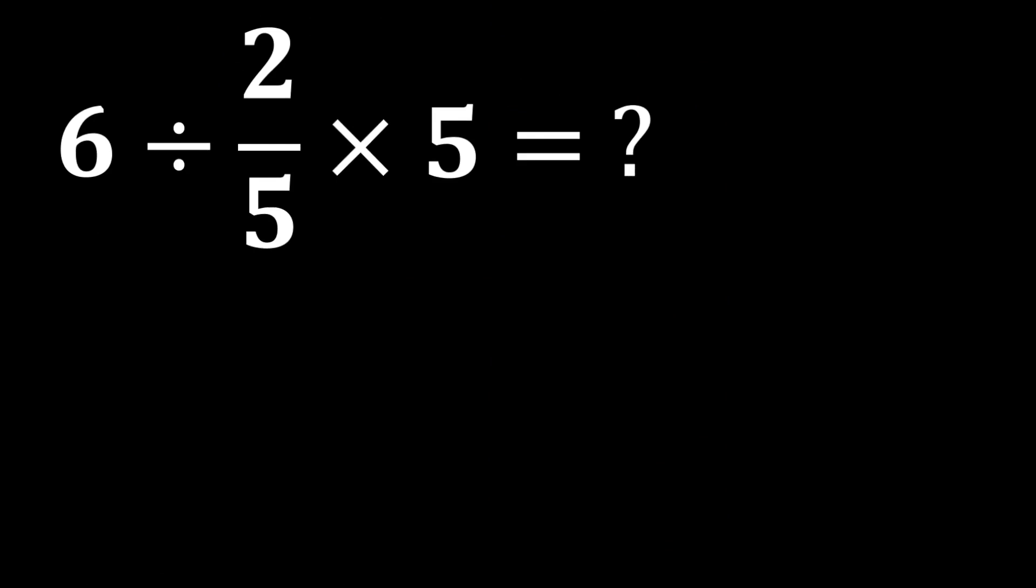6 divided by 2 over 5 multiplied by 5. In this question, we have both division and multiplication. According to PEMDAS, we perform these operations from left to right. First, we do the division, 6 divided by 2 over 5. To solve this part of the question, we use the KCF rule.